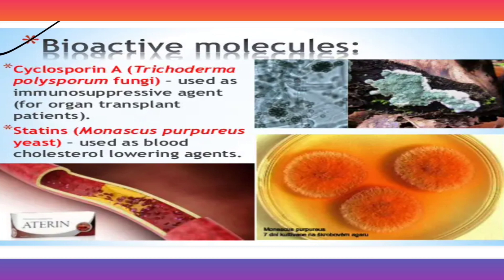Next, bioactive molecules. Cyclosporin A, produced from the fungus Trichoderma polysporum, is used as an immunosuppressive agent for organ transplant patients. Statins, produced by the yeast Monascus purpureus, are used as a blood cholesterol-lowering agent — this is a highly important question.